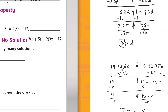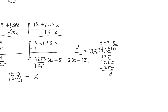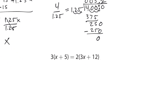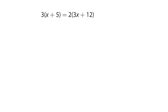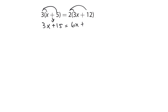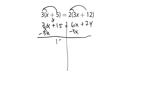Number 8 — I'll copy it and bring it over. We distribute the 3: 3 times x is 3x, and 3 times 5 is 15 — positive, since it was positive — so 3x plus 15. On the right: 2 times 3x is 6x, and 2 times 12 is 24 — positive times positive — so 6x plus 24.